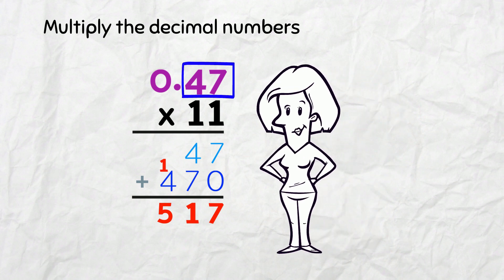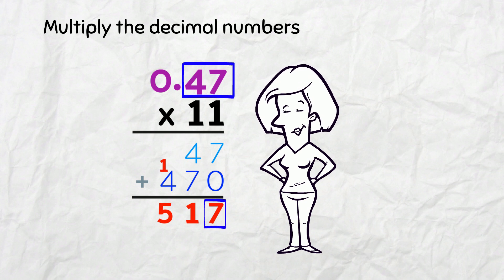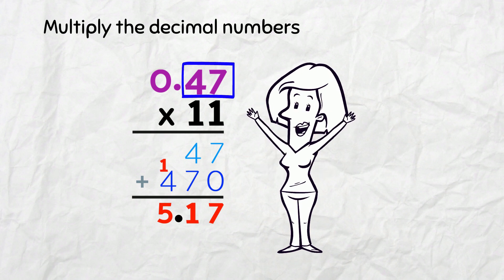Here we have 2 decimal figures, so we need 2 decimal figures in the answer! Count from the right to the left. 1, 2. And there it is! 5.17—2 decimal figures in the answer. All done! Pretty simple, right?